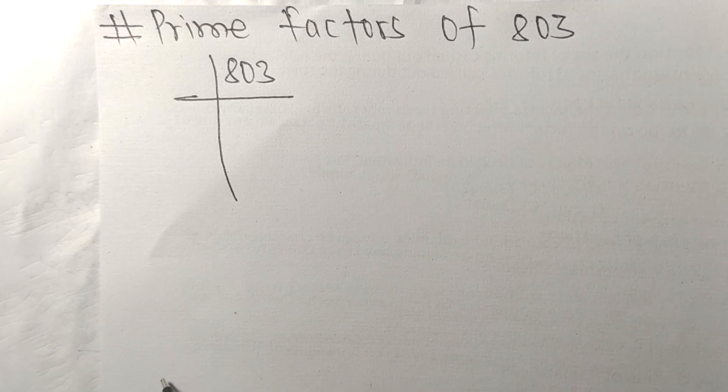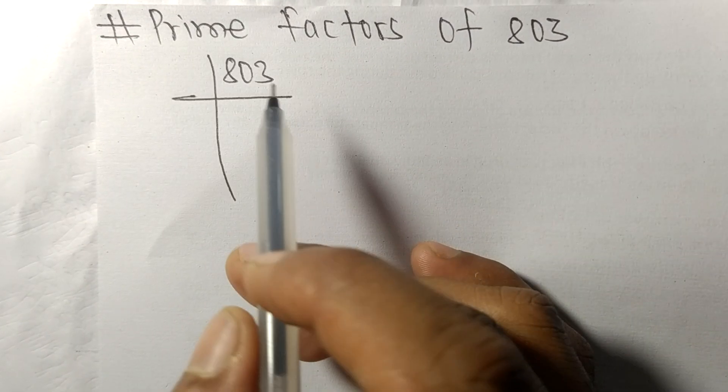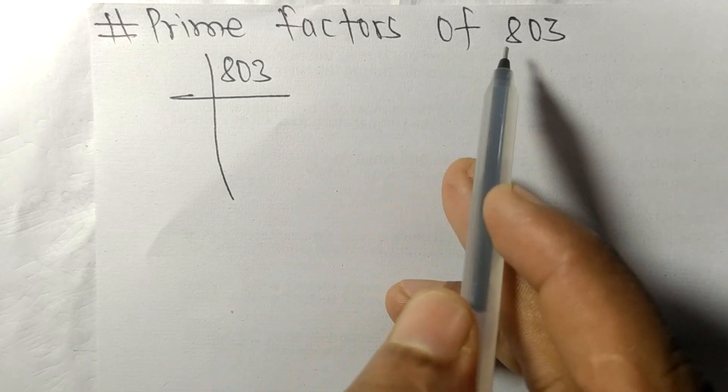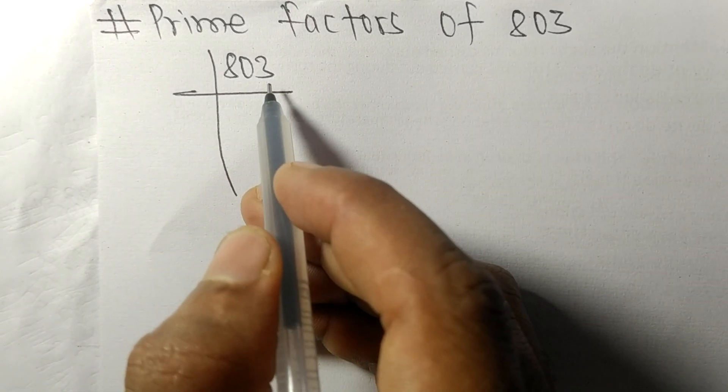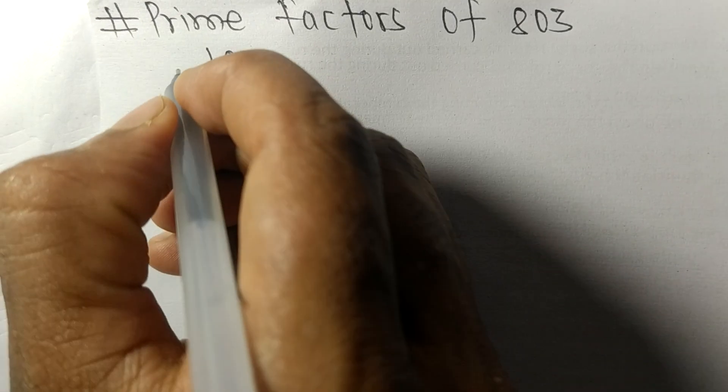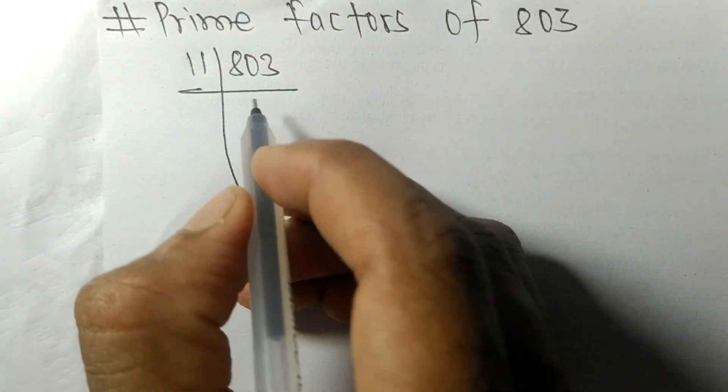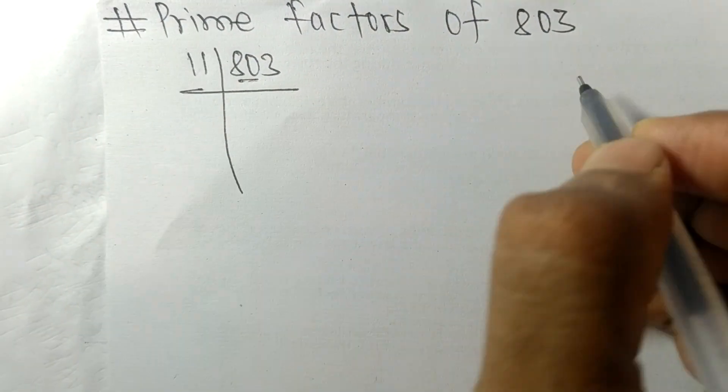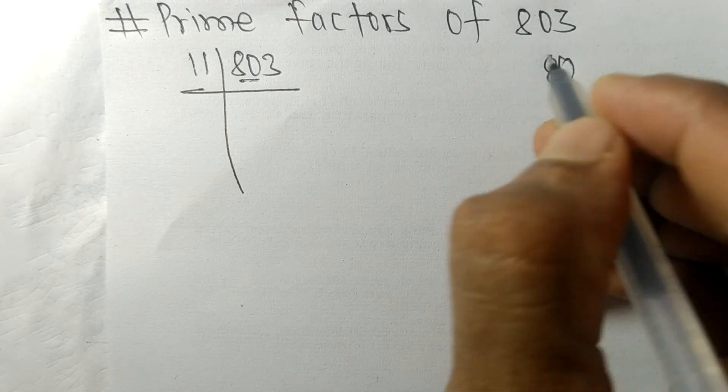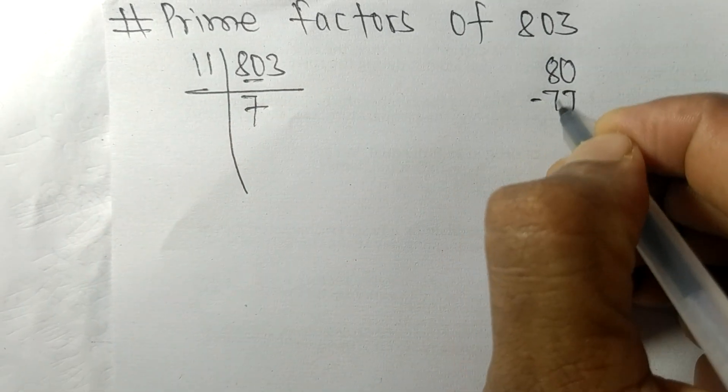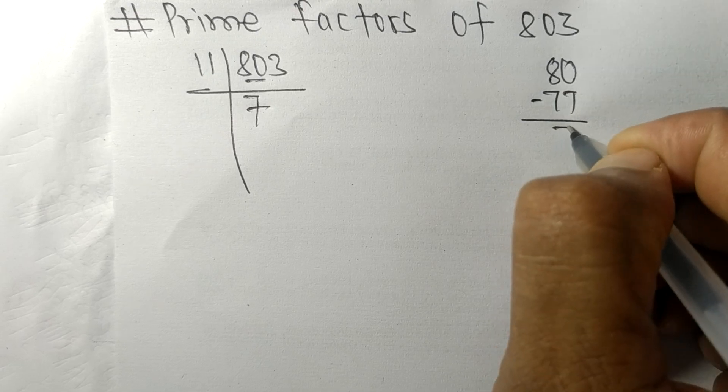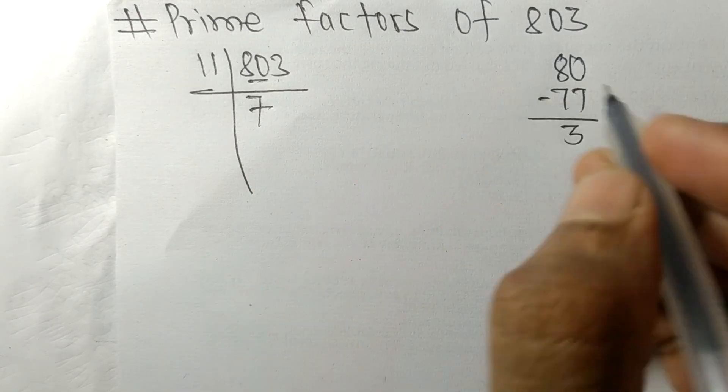Today in this video we shall learn to find the prime factors of 803. 803 is exactly divisible by 11. So first we have 80. 11 times 7 means 77. On subtracting we get 3, and this 3 comes down to make 33.